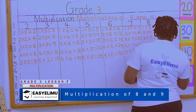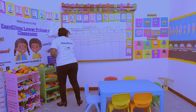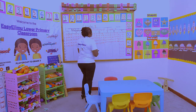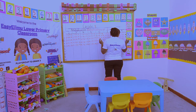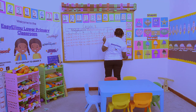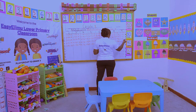Here is the pattern for the 9 times table. On one side, you count down: 9, 8, 7, 6, 5, 4, 3, 2, 1, 0. On the other side, you count up from 0 to 9.